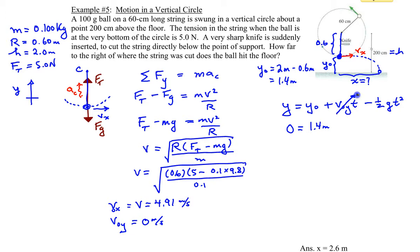It has no initial vertical velocity. And then we have minus one half times 9.8 meters per second squared times t squared. So let's go ahead and solve for t. And we'll get a time of 0.5345 seconds roughly.